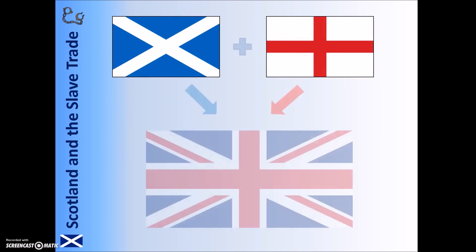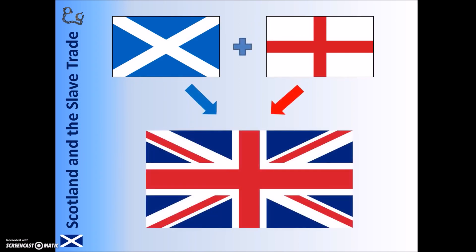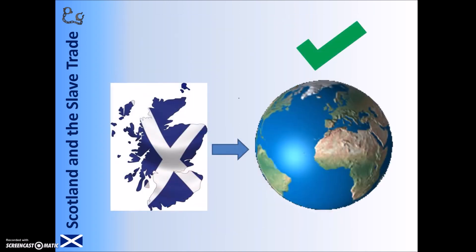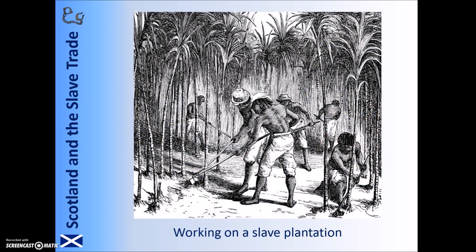In 1707, England and Scotland joined together to create the Kingdom of Great Britain, partly as a consequence of the economic problems Scotland faced after the failure in Panama. In joining with England, Scotland was able to gain access to England's overseas colonies, and this would lead to Scotland and Scots playing a central role in the slave trade, including establishing businesses that benefited from slave labour and working in jobs that made use of slave products.